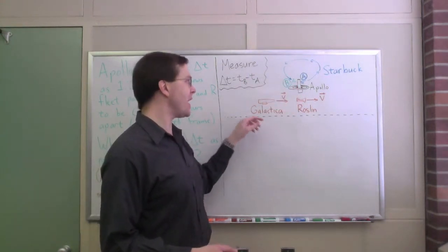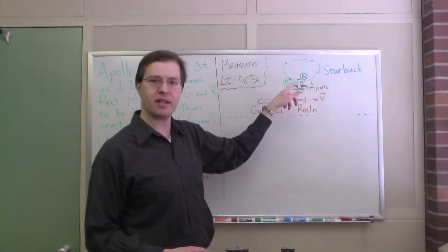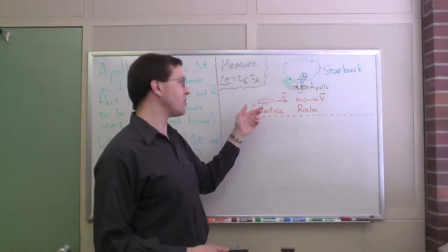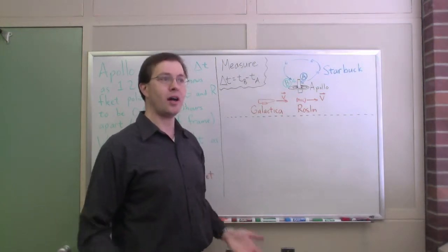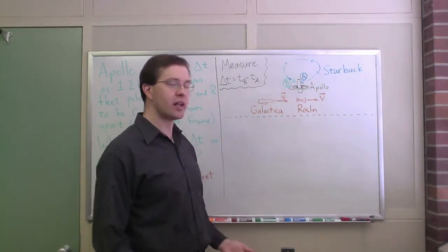By chance, Starbuck was returning to the space station, event B, at exactly the moment that the Battlestar Galactica was passing by the space station. So in that previous example, we were talking qualitatively about this.